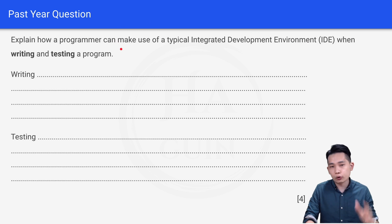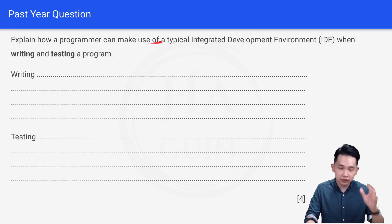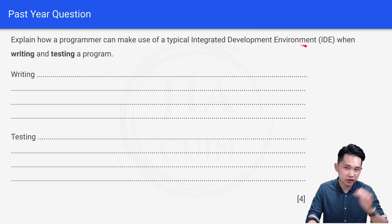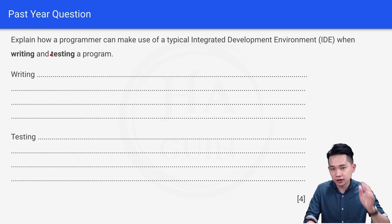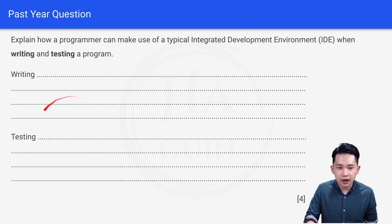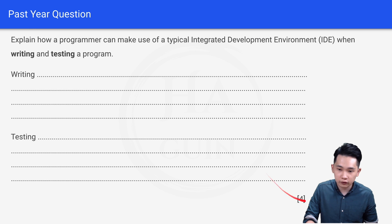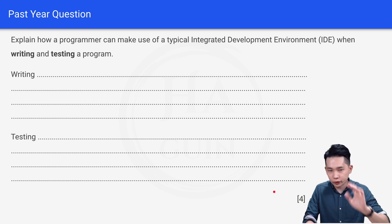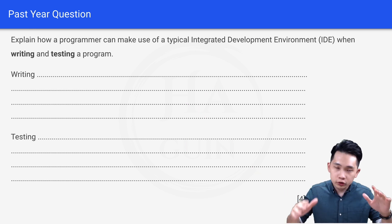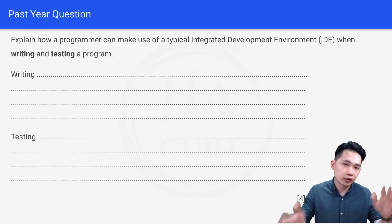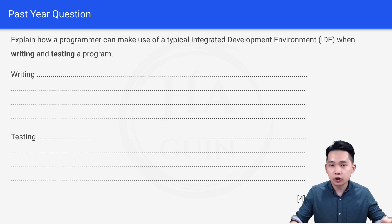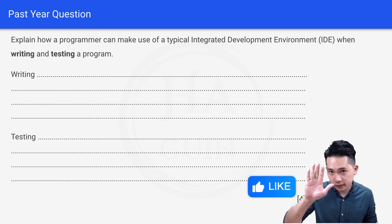Finally, let's look at a practice question: 'Explain how a programmer can make use of a typical IDE when writing and testing a program.' This is worth four marks, so you'll likely need two points for writing and two points for testing. Try to answer based on what we've covered in this video — comment below. Thank you and see you next time!